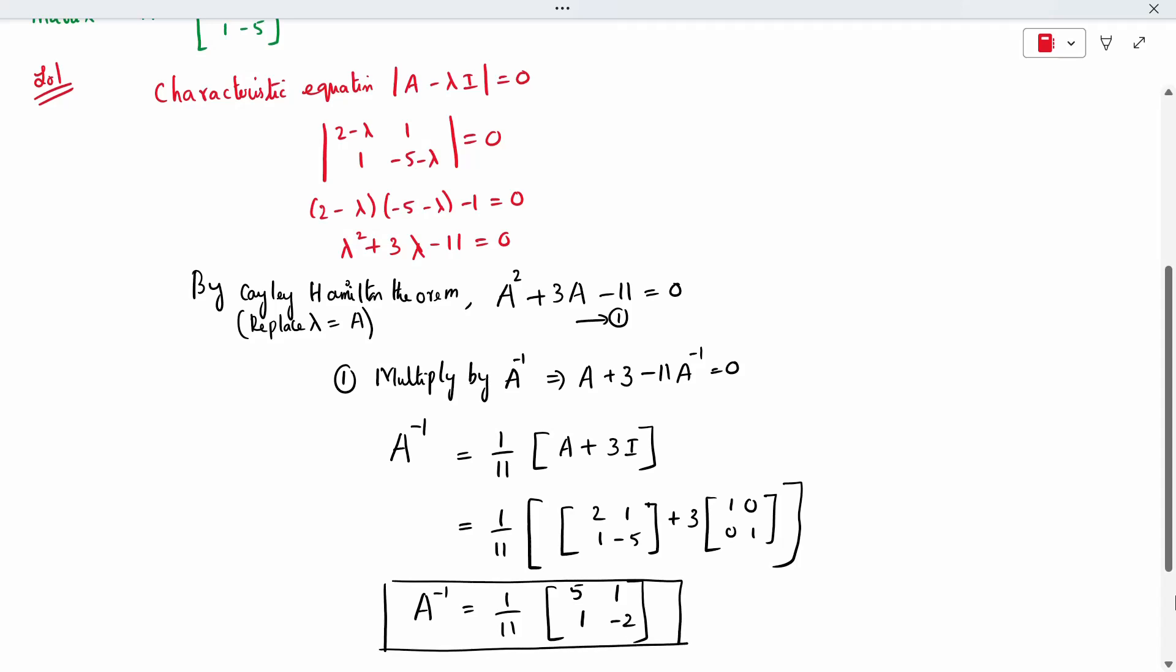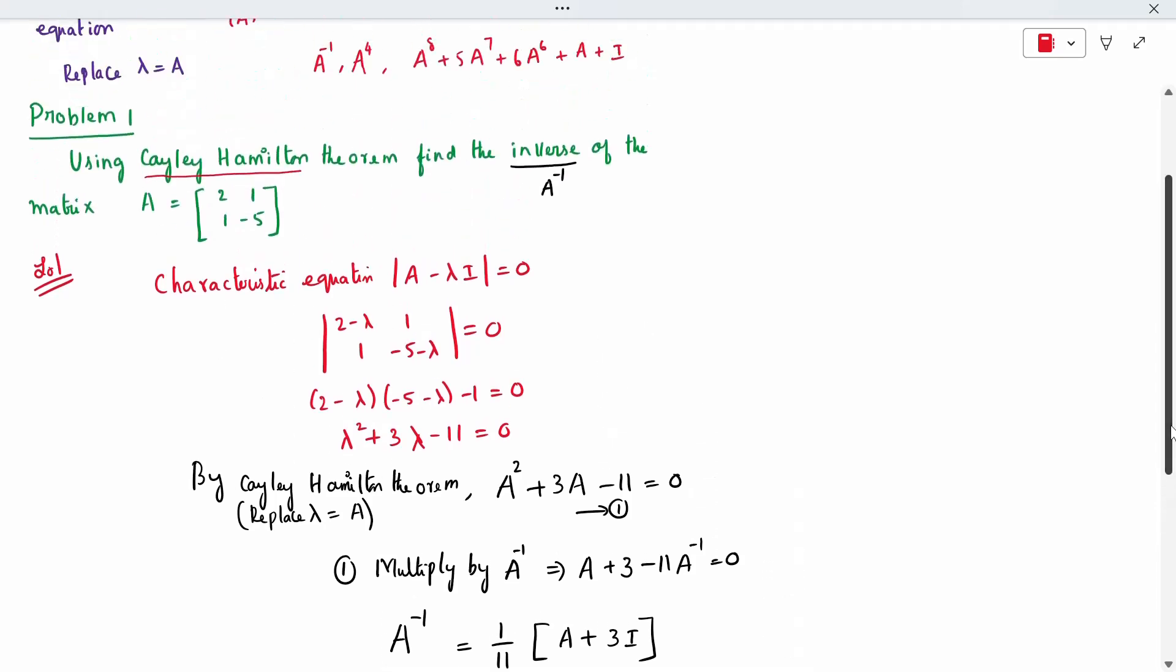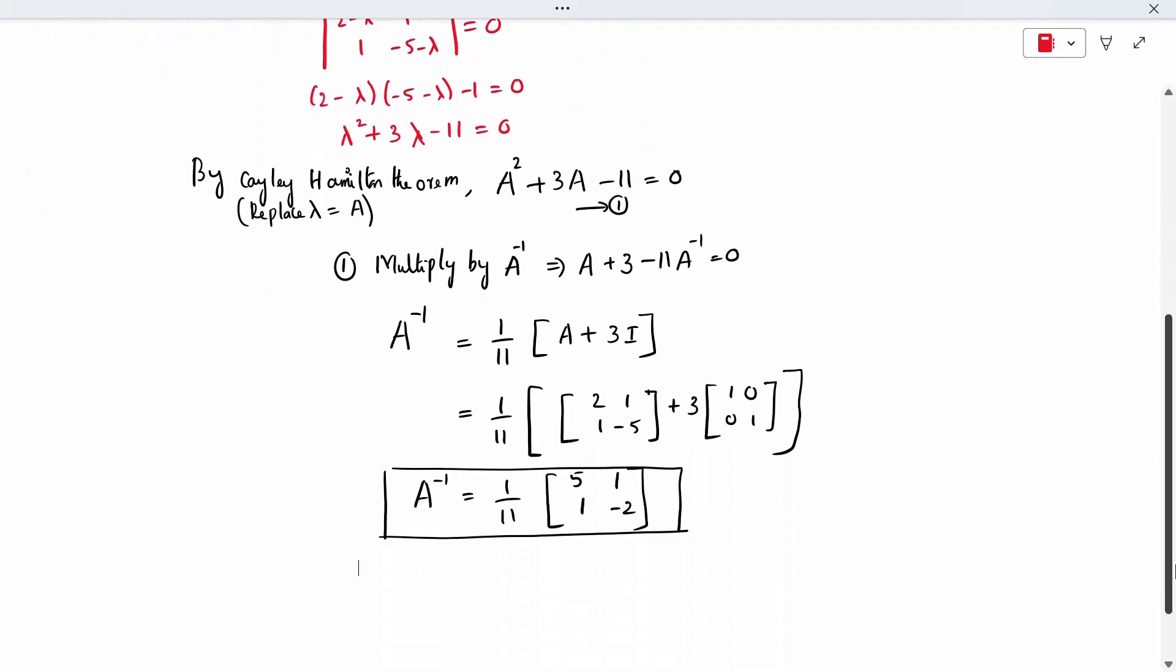Check the question now. They have mentioned find the A inverse. Now we have found the A inverse. Normally, everyone knows what is the formula. Shortcut, what is the formula for A inverse? 2 cross 2. 1 divided by adjoint of A. Adjoint of A is 11. So normal matrix multiplication means what do you do? In the diagonal element, only interchange the element. Opposite diagonal, when you have only negative, you will change it. So when you have the elements, this, you have to change it.